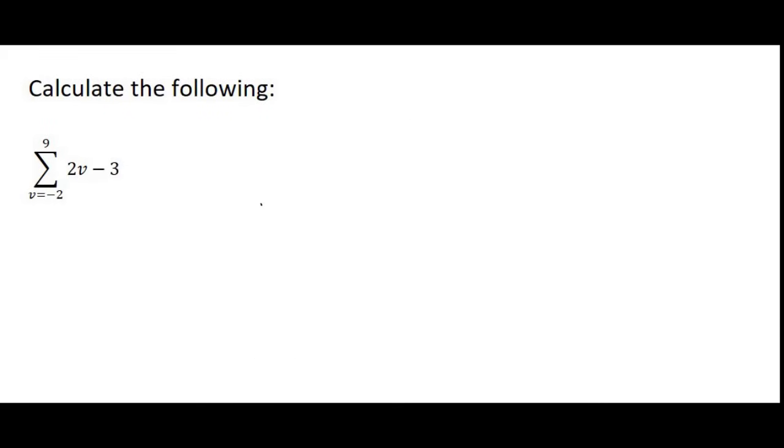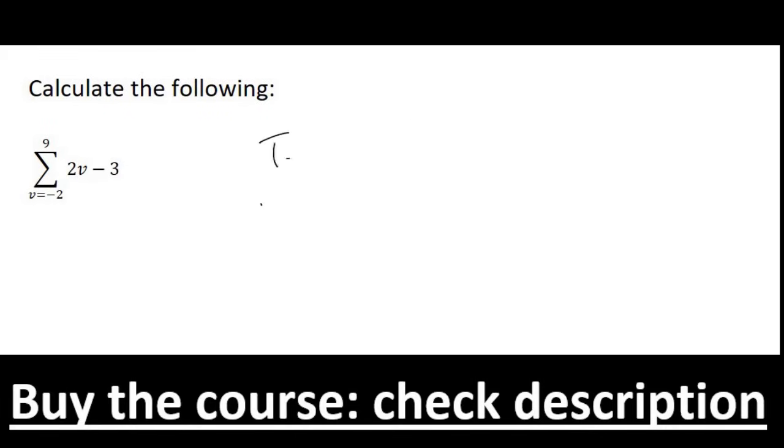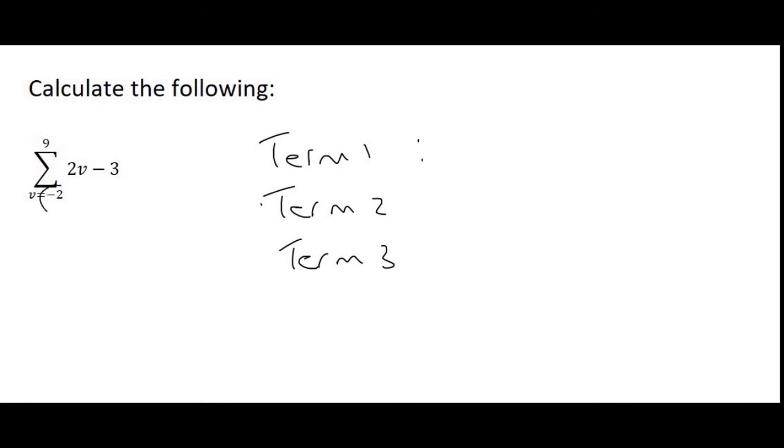So when trying to work out a sigma notation question, we have to go work out term 1, 2, and 3. To find term 1, you just plug this number into the place of V. So it will be 2 times minus 2, minus 3, and that's going to give us minus 7. Then you just add 1 to this number over here. So now that's going to be minus 1, and that's going to give us minus 5. And then for term 3, you're going to add 1 to V again. So now V will be 0, and that's going to give us minus 3.